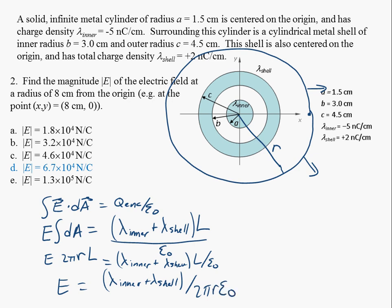In this case, I can plug in some numbers here, and lambda inner is minus 5, so I get minus 5 times 10 to the minus 9th coulombs per centimeter. And the outer is plus 2, 2 times 10 to the minus 9th coulombs per centimeter. Again, my L's cancelled out. And below this here, I get 2 pi.